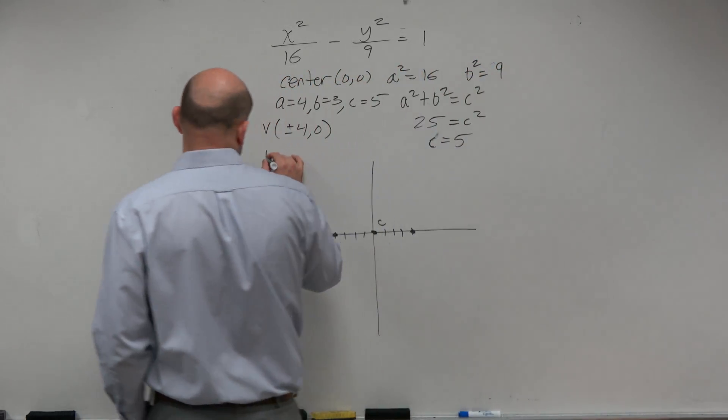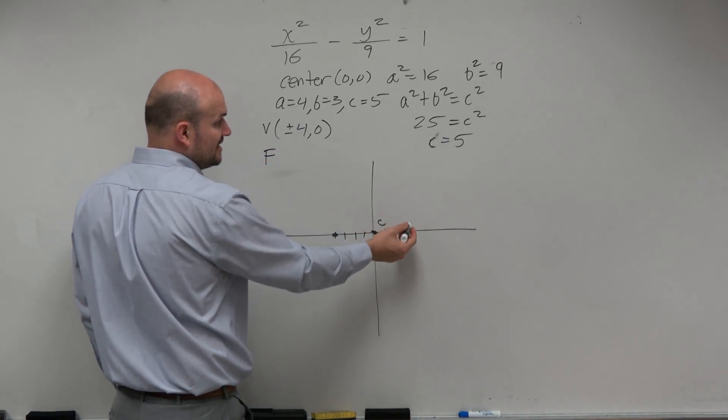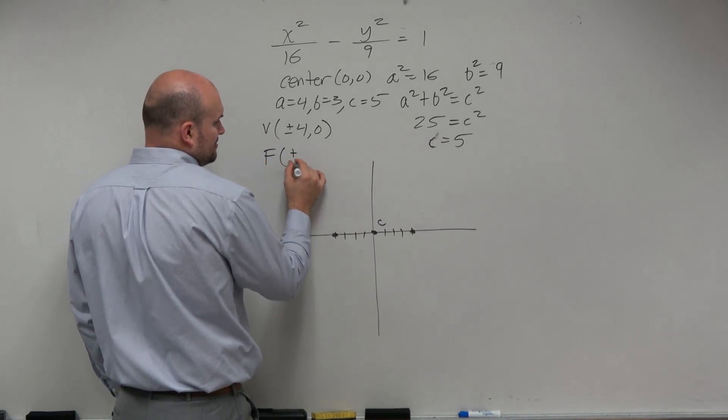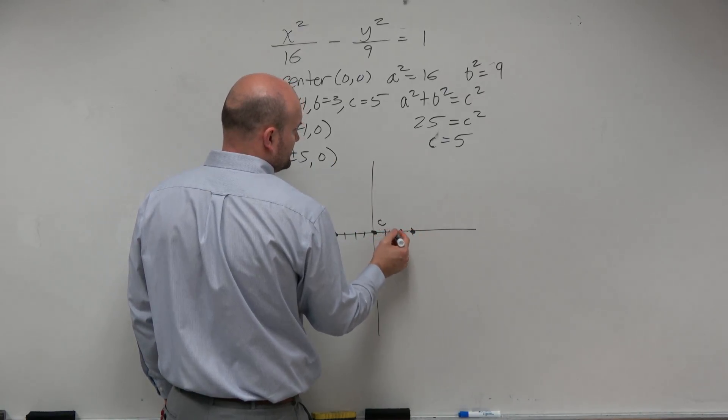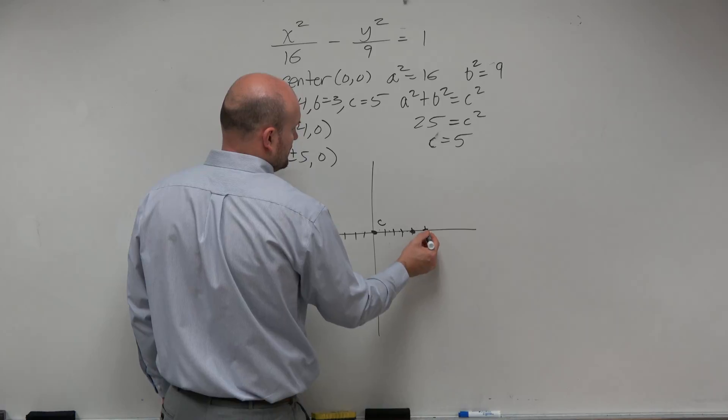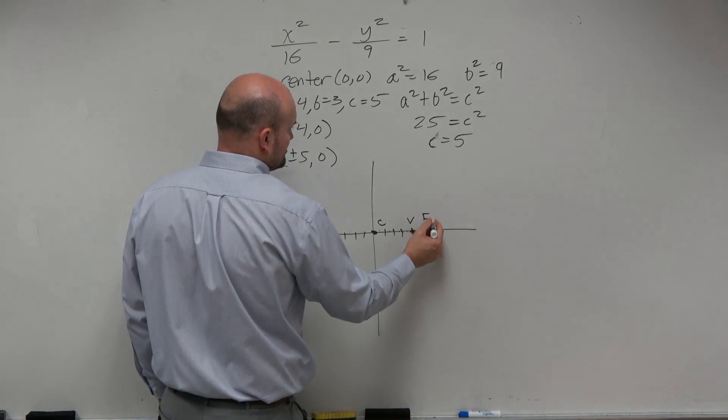My foci is a distance of c from the center, which is 5. So that's going to be plus or minus 5 comma 0. 1, 2, 3, 4, 5. 1, 2, 3, 4, 5. Here's my vertices. There's my foci.